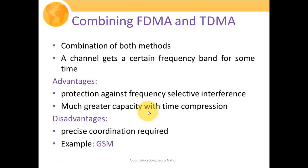The disadvantage of the hybrid scheme is that precise coordination is required, since channel conditions and user requirements fluctuate dynamically, in order to fulfill the demands of individual users in an interference-free environment. An example of this hybrid technique is GSM — in 2G GSM systems, the hybrid multiple access scheme combining FDMA and TDMA is exploited.